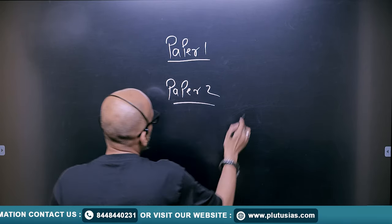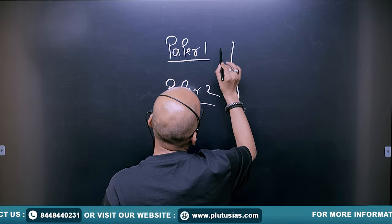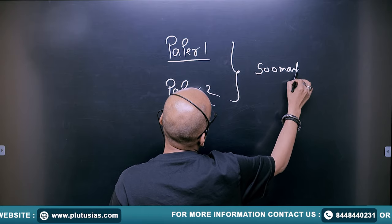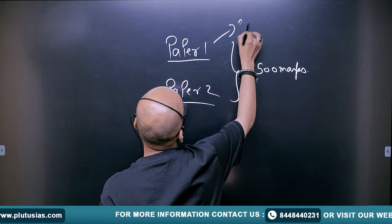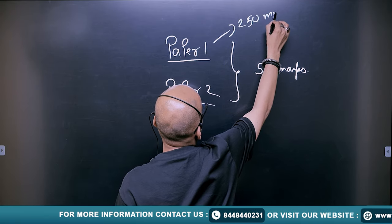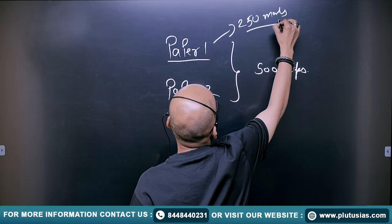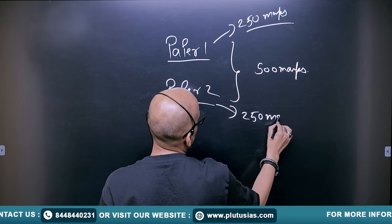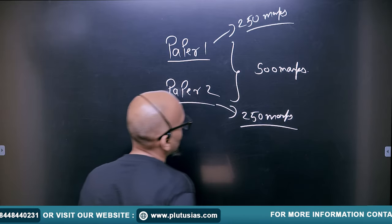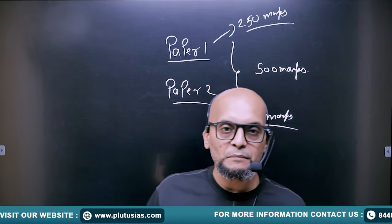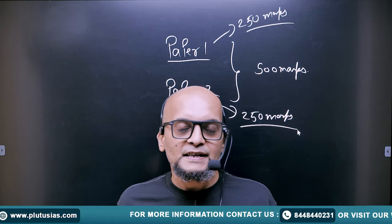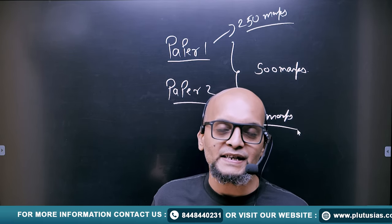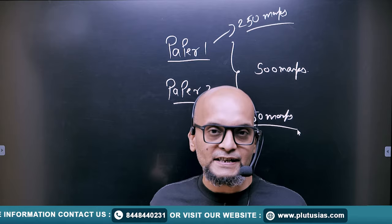Both of these papers are of 250 marks each making it 500 marks in total. This is of 250 marks and this is also of 250 marks. The total comes to 500 marks. Now guys, in humanity, scoring 230, 240 or you can say 250 is a very tough and tedious job.